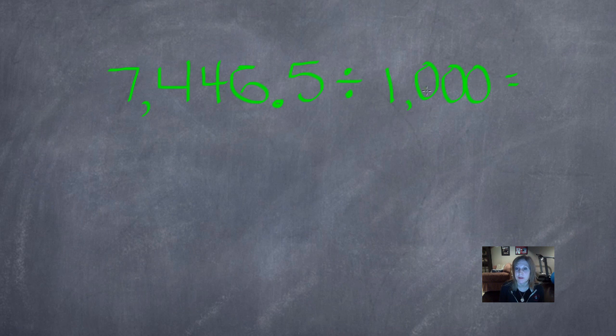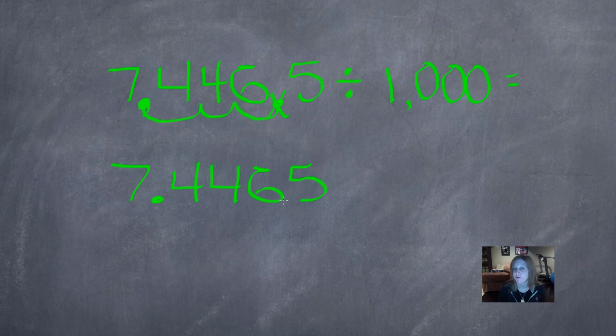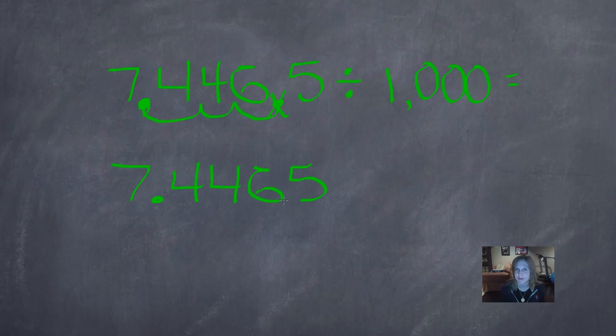Let's go ahead and work this problem. Let's count the zeros in 1,000. One, two, three. So I'm going to move my decimal three places to the left. One, two, three. Now my decimal takes over that comma space, and I no longer have a decimal here. So when I rewrite it, there's my final answer. 7.4465.